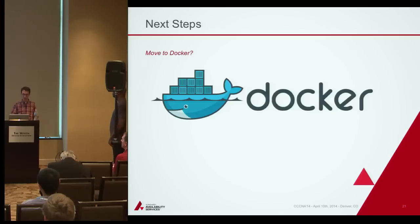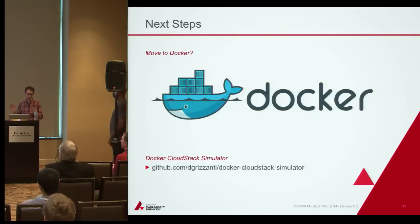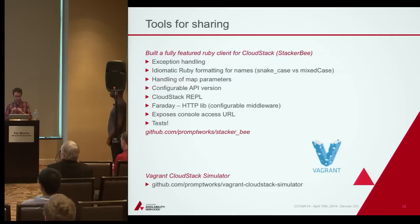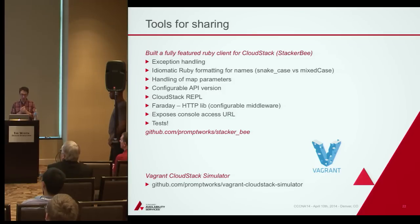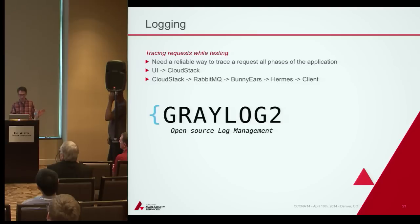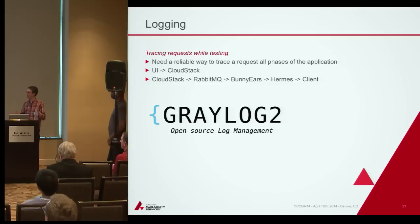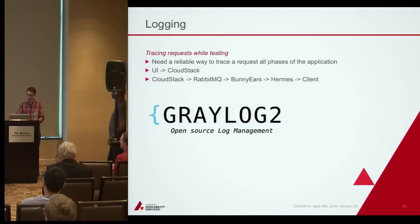Docker is the new cool thing, so we did a prototype replacing VirtualBox and Vagrant with Docker — it works pretty well, we just haven't had time to fully integrate it into the pool. We're also using a Ruby client for CloudStack called StackerBee, built by our partner company and available on GitHub — it has a lot of interesting features. And we use Graylog for logging, which helps trace problems through the development environment when issues span the UI, Rails, CloudStack, and event bus layers.